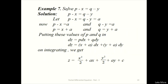Another example: Solve p - x = q - y. This is again Standard Form 4. Setting p - x = q - y = a, we get p = x + a and q = y + a. Substituting into dz = p dx + q dy gives dz = (x + a)dx + (y + a)dy. Integrating, z = x²/2 + ax + y²/2 + ay + c. That completes all four standard forms.